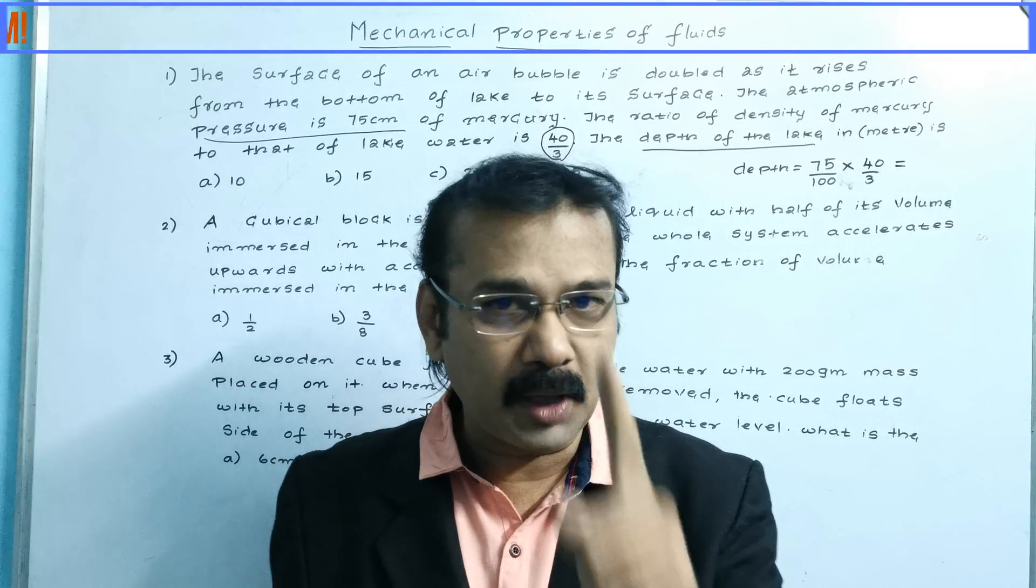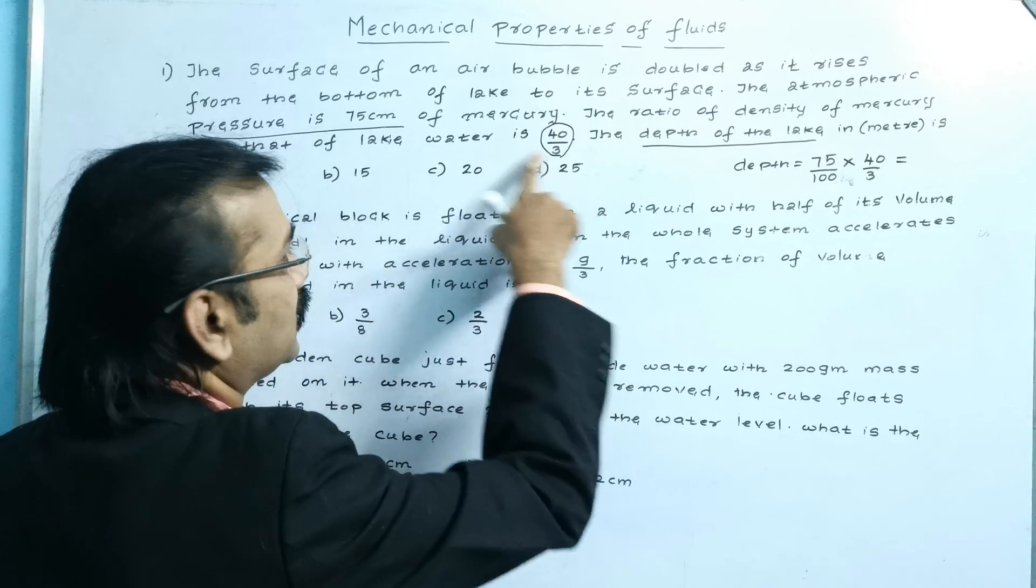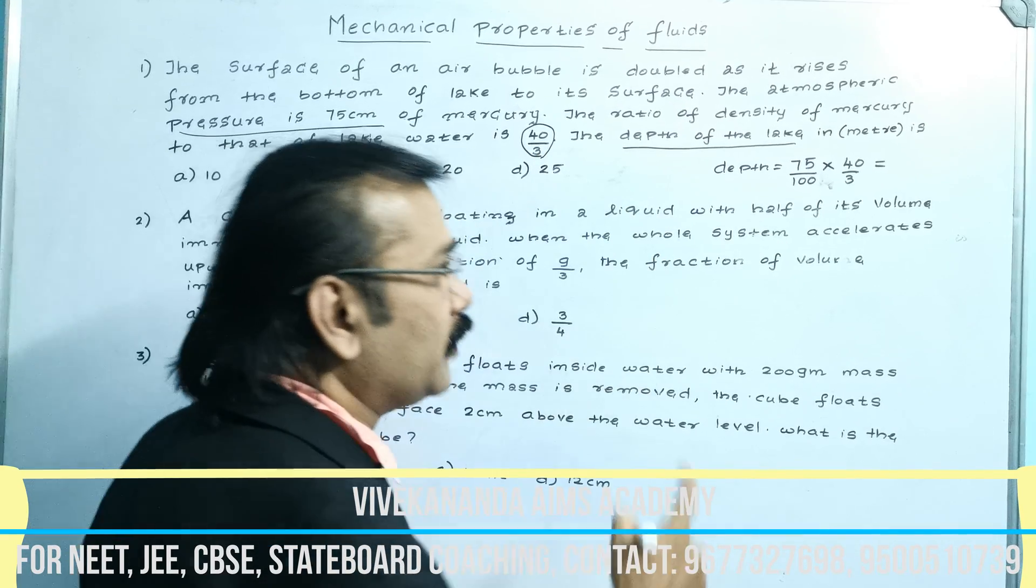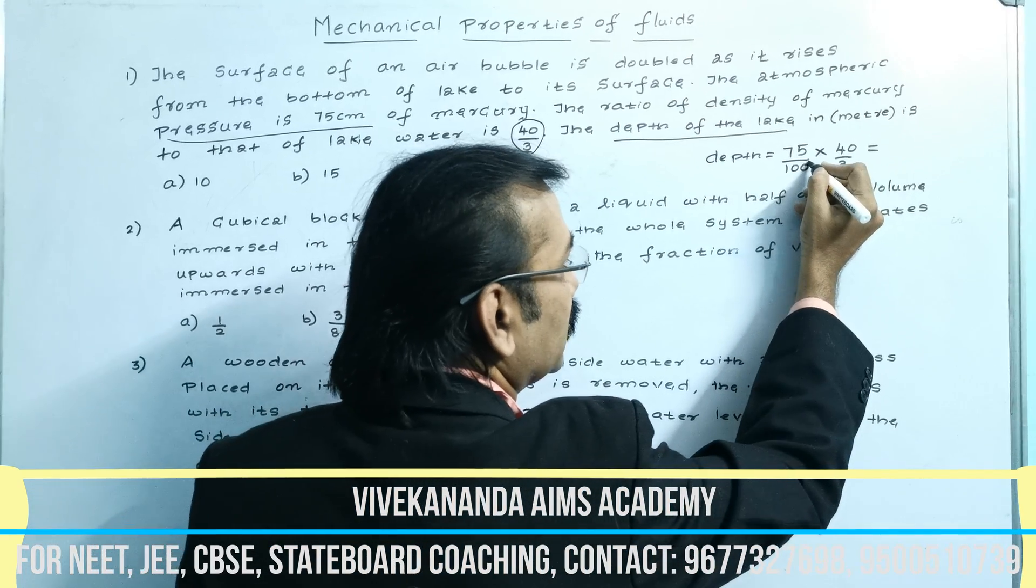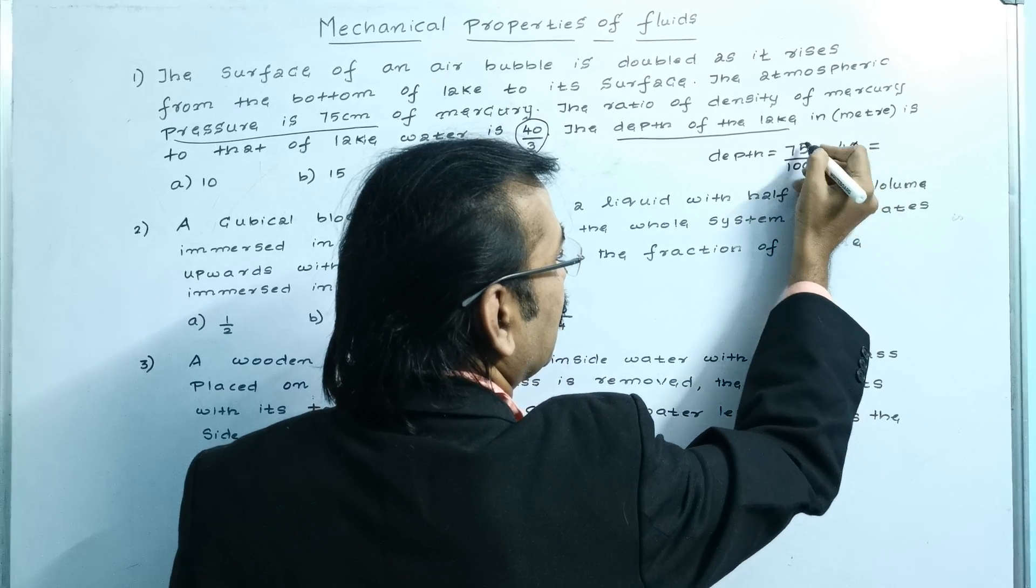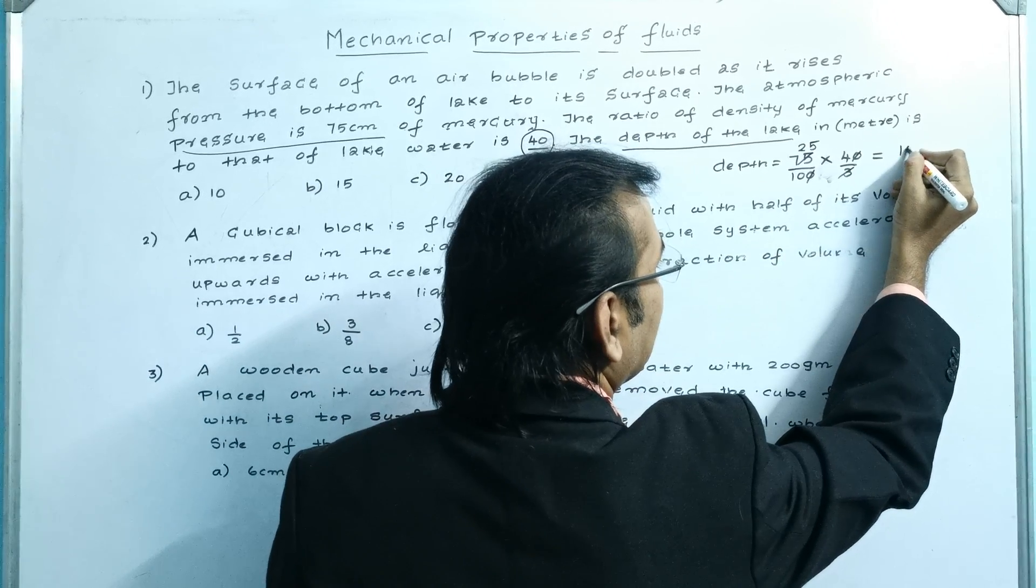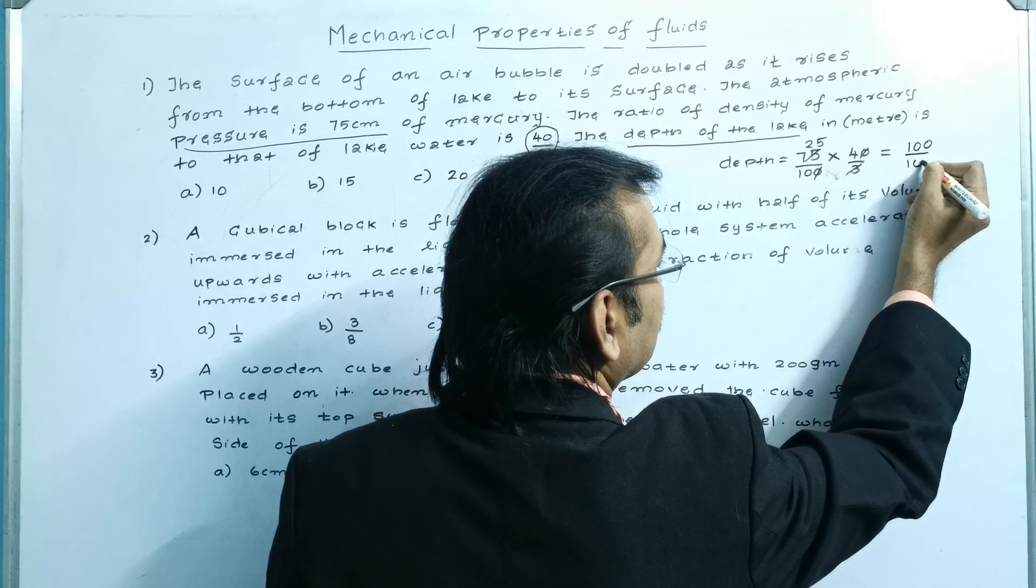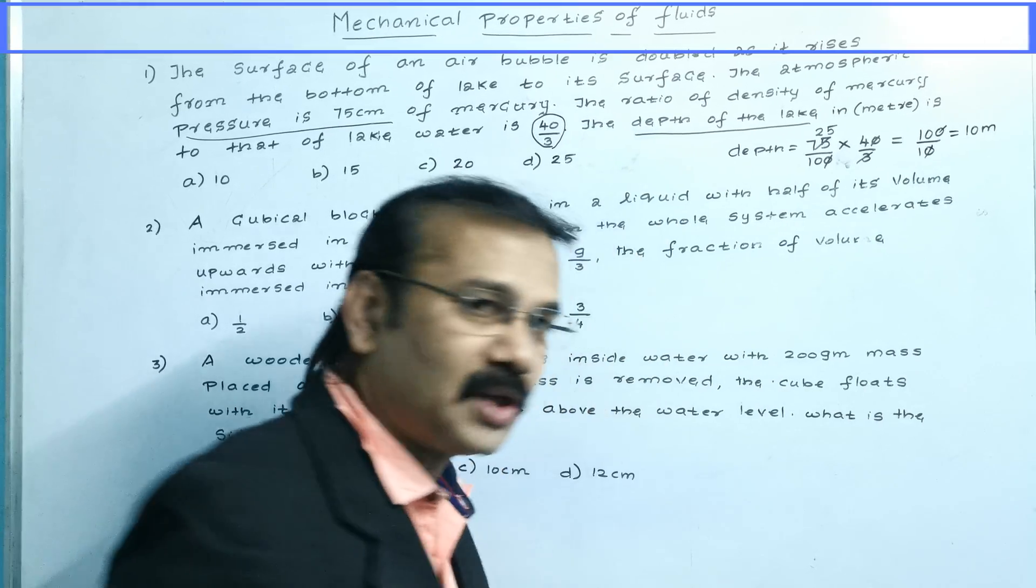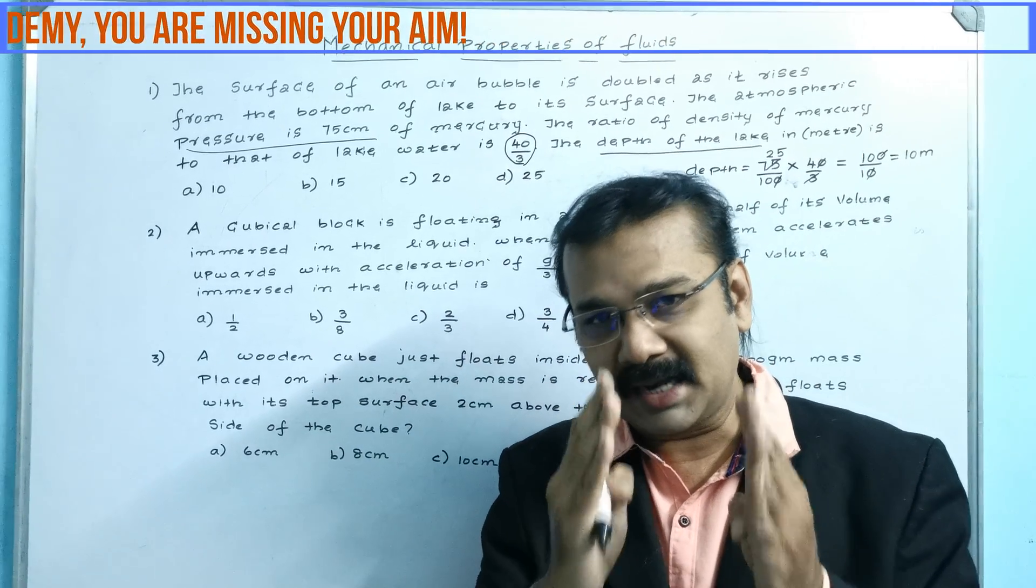Now immediately you'll get the answer. To find the depth of the water, multiply the two numbers: 75 by 100 into meter, times 40 by 3. You can cancel the zeros and the 3, then 25 times 4 is 100 divided by 10. Your answer will be 10 meter.